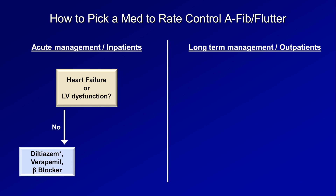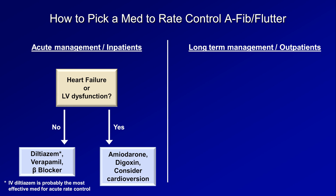There is some evidence, consistent with my personal experience, that IV diltiazem may be the most effective medication for acute rate control. If there is heart failure or LV dysfunction, those meds are relatively contraindicated because they are all negative inotropes. Options in this case include amiodarone and digoxin, as well as cardioversion. Keep in mind that amiodarone carries the risk of pharmacologically cardioverting the patient back to sinus, which may or may not be desirable depending on how long the patient has been in AFib or AFlutter and whether they have been adequately anticoagulated. Also, digoxin has a long onset of action, even when loaded, and it will definitely be the slowest of any of these options at getting the rate under control.